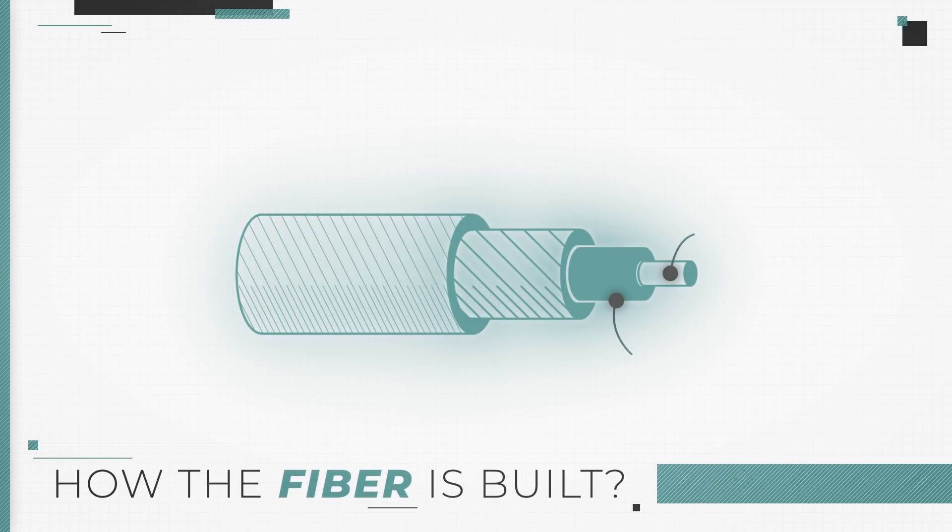There are four main parts of the fiber. Core and cladding which are made of extremely pure glass or plastic, also called silica.